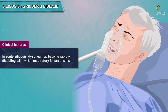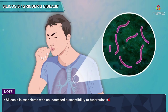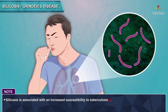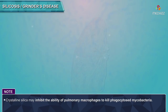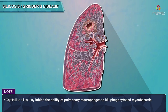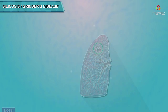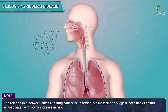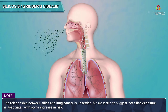Signs of cor pulmonale — accentuated second heart sound, peripheral edema — may be present as late manifestations of advanced disease resulting from chronic hypoxia-induced vasoconstriction and parenchymal destruction. In acute silicosis, dyspnea may become rapidly disabling, followed by respiratory failure. Silicosis is associated with increased susceptibility to tuberculosis; silicosis is postulated to depress cell-mediated immunity and inhibit pulmonary macrophages from killing phagocytosed mycobacteria. Nodules of silicotuberculosis often contain a central zone of caseation. The relationship between silica and lung cancer is unsettled, but most studies suggest some increased risk.